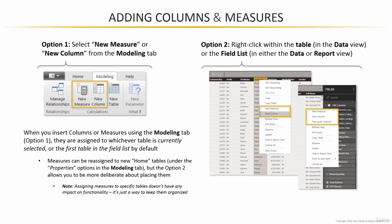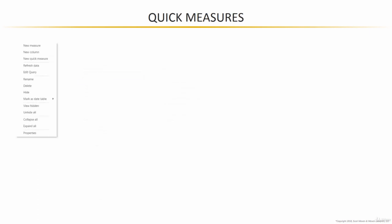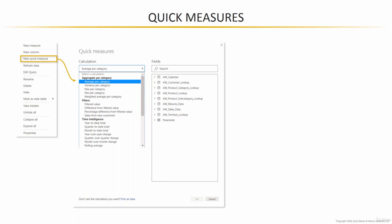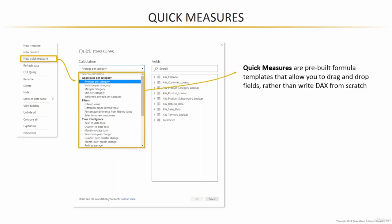On the right side of the screen you'll see a third option called new quick measure. When you select the quick measure option, you'll see a big dialog box show up with a bunch of calculations and a new field list embedded in that dialog box. What you've got here are basically like recipes with different calculations to perform different types of analyses — average per category, weighted average per category, difference from filtered values, time intelligence, and so on. They're basically pre-built formula templates that help you drag and drop fields rather than actually writing any DAX from scratch.